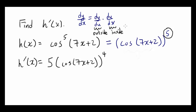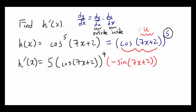Now we find the derivative of the inside function, which is cosine of 7x plus 2. We apply the chain rule once again: cosine of 7x plus 2 is the outside function, and 7x plus 2 is the inside function. The derivative of cosine of u is negative sine of u, giving negative sine of 7x plus 2. Then we take the derivative of the innermost function, 7x plus 2, which is 7.